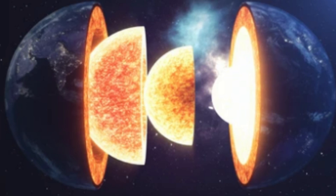The layers of the Earth's crust are typically categorized based on their depth, composition, and physical properties. The upper crust is the uppermost layer, extending from the Earth's surface to a depth of about 5–10 km beneath continents and about 5 km beneath ocean basins. It is composed primarily of granitic rocks in continental regions or basaltic rocks in oceanic regions, and contains a variety of minerals and elements.